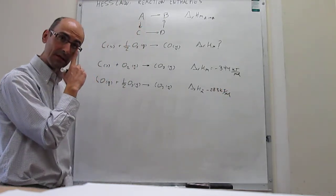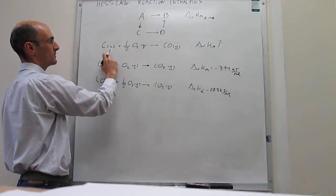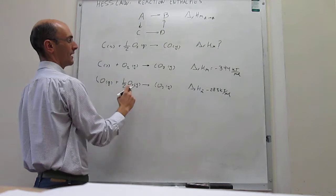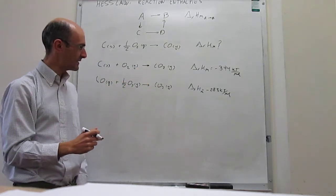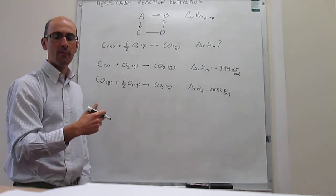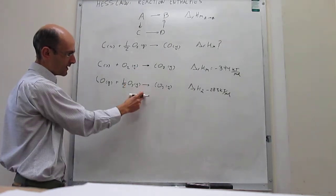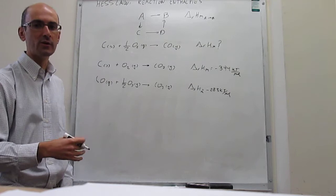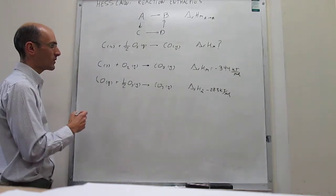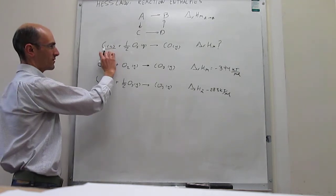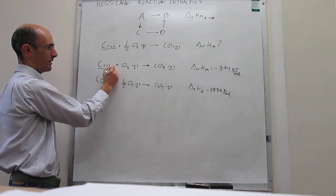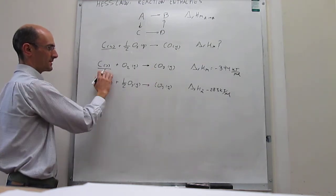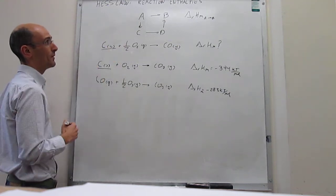The question is: we have to go from reagents — carbon with half a molecule of oxygen — to generate carbon monoxide. We don't know what the enthalpy of that process is directly. However, we can construct an alternative pathway utilizing these two reactions so that the reagents and products are the same. Notice that the reagents in our target reaction appear in the first available reaction, so we can use that as the first step. For the products, CO appears as a reagent in the second equation, which is not directly useful.